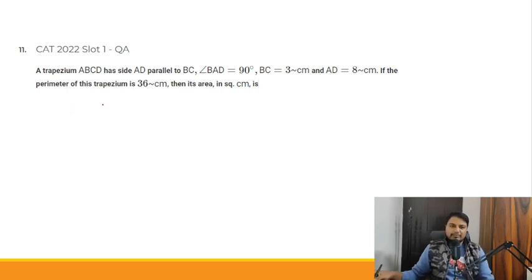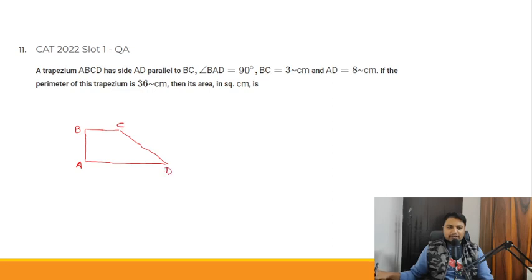So ABCD is a trapezium where angle BAD is 90°. Let me draw this. Since one angle is 90°, we can draw the trapezium like this. Let me label the vertices: this is B, this is A, this is C, this is D. So BAD,